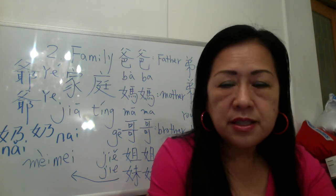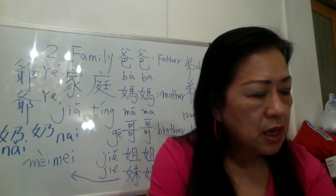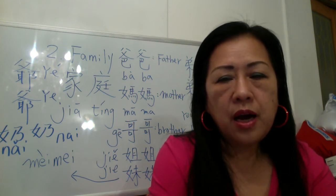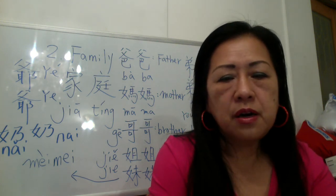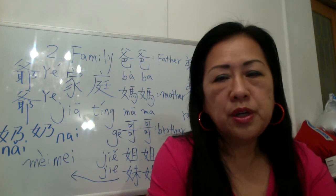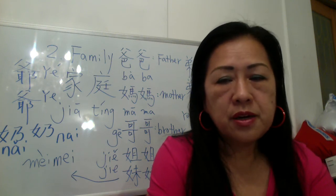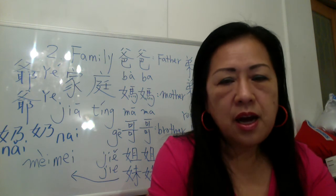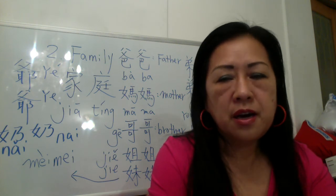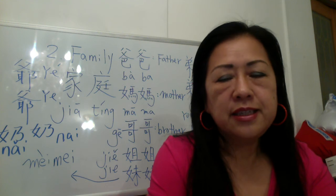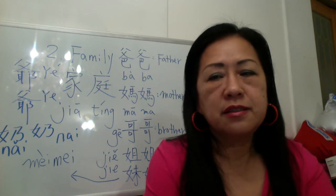儿子，儿子 is son. Number 18: to have — 有. I have a sister: 我有一个妹妹. I have a brother: 我有一个哥哥. I have a younger brother: 我有一个弟弟.